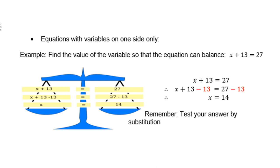Equations with variables on one side only. Example: find the value of the variable so that the equation can balance. For instance, x plus 13 equals 27. What value must x take so that the left-hand side equals the right-hand side? If you look at the scale or diagram there, you will see that we normally get rid of the 13 on both sides, then we get x equals 14. Or we can do it mentally by inspection. Ask yourself: what plus 13 is 27? However, it is good to find a certain method to solve these problems. Remember, test your answer always by substitution.